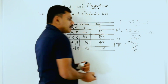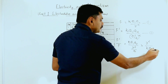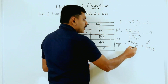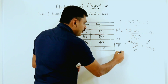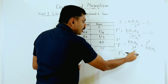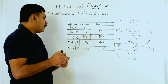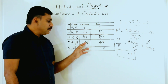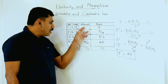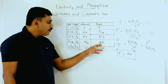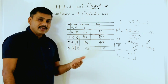Taking F' by F: k·q1·q2 divided by r²/4, multiplied by the reciprocal r² divided by k·q1·q2. k·q1·q2 cancels, r² cancels, and 1/4 remains in the denominator, becoming 4 in the numerator. So F' = 4F. If the distance is reduced from r to r/2, the new force is four times the previous value.